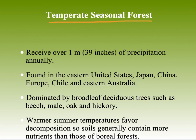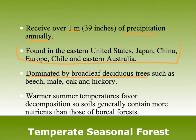Temperate seasonal forest is a very productive biome. It receives over 1 meter of precipitation annually. It's dominated by broadleaf deciduous trees. These trees change color in the fall, drop their leaves in the winter, and then regrow green leaves in the spring. The soils contain lots of nutrients, and warmer summers cause a lot of decomposition.